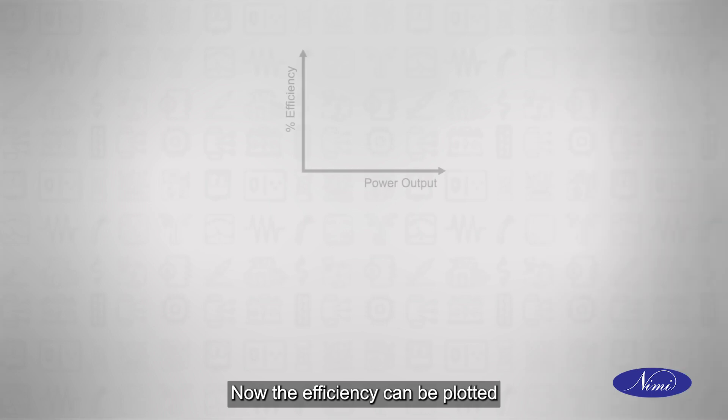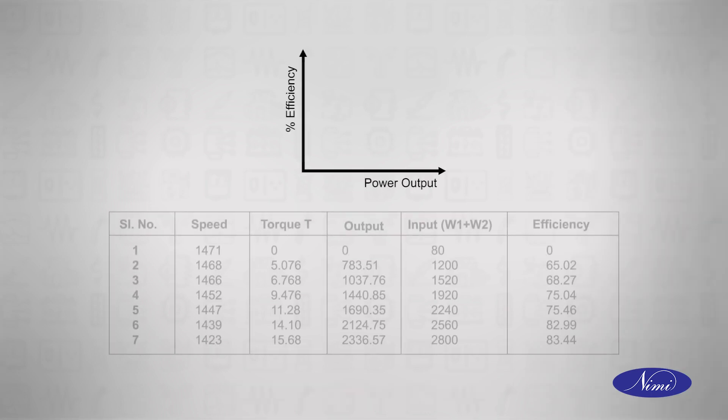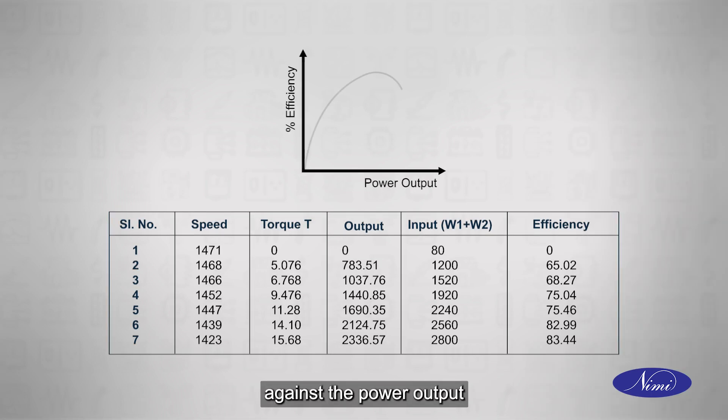Now the efficiency can be plotted against the power output. It can be observed that the efficiency increases as the load increases and thus the power output increases. It reaches a peak value at a particular load and then decreases.